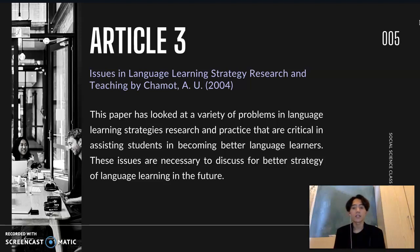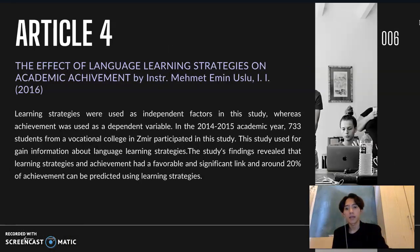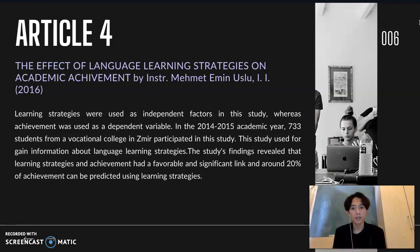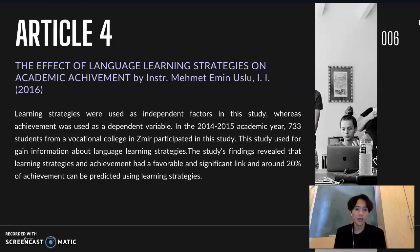The fourth article is by Mehmed Amin Uslu, titled 'The Effect of Language Learning Strategies on Academic Achievement.' Learning strategies were used as independent factors in the study, whereas achievement was used as a dependent variable. In the 2014–2015 academic year, 733 students from a vocational college in Izmir participated. The study findings revealed that learning strategies and achievement had a favorable and significant link, and around 20 percent of achievement can be predicted using learning strategies.